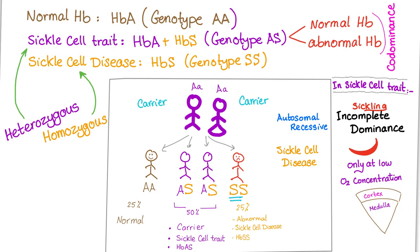In sickle cell trait, sickling follows incomplete dominance — a genetic phenomenon where sickling occurs only under certain conditions. If it were complete dominance, sickling would be present all of the time. Because it's incomplete dominance, sickling occurs only at low oxygen concentration, such as in the renal medulla, where there is hypoxia and hypertonicity, forcing the cells to sickle only under those certain conditions. This is sickle cell trait, not sickle cell anemia.